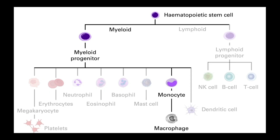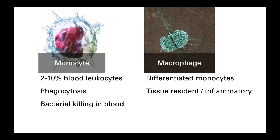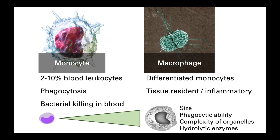Leaving the granulocytes behind, we are now going to look at monocytes and macrophages. Monocytes are blood-borne, making up between 2 and 10% of blood leukocytes, and their main role is phagocytosis and bacterial killing in the blood. Macrophages are a type of differentiated monocyte found in the tissue. There are two types: resident macrophages, which populate almost every type of tissue in our body very early during development and self-renew throughout our life to provide local protection; and during infection, these are supplemented by inflammatory macrophages, which derive from blood monocytes but undergo changes as they enter the tissue, becoming larger with an increasingly complex number of organelles and hydrolytic enzymes, as well as an enhanced phagocytic capacity. Unlike tissue-resident macrophages, these inflammatory macrophages dissipate after the inflammatory response is resolved.